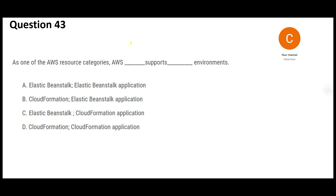This next question is like fill in the blanks. You have AWS resource categories and it says 'AWS [blank] supports [blank] environment.' Option A says Beanstalk supports Beanstalk application — that doesn't make sense.